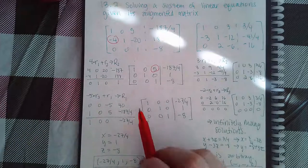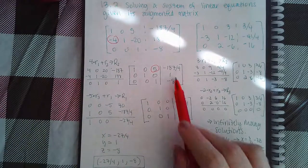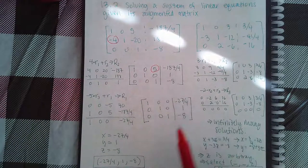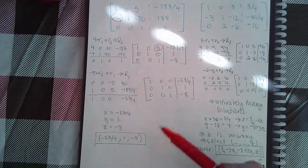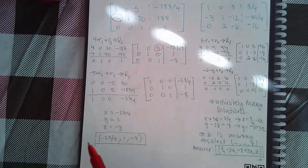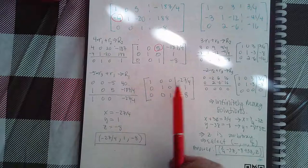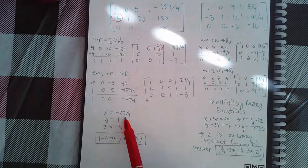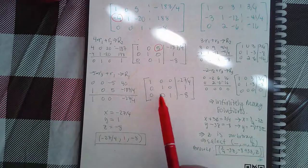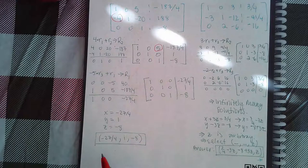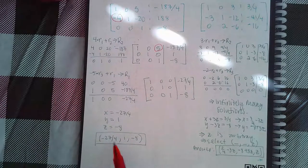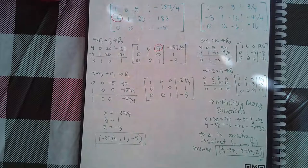This all becomes my new row one; row two and row three stay exactly the same. Then I can go back into equation form and say that one times x equals this number, one times y equals that number, and one times z equals that number. So I have a solution: x, y, and z.